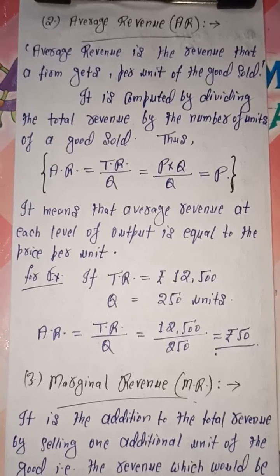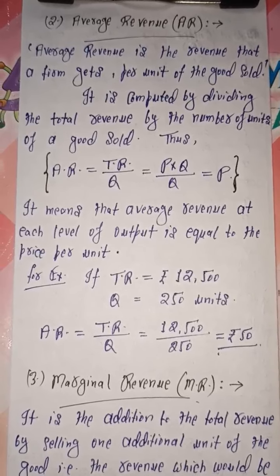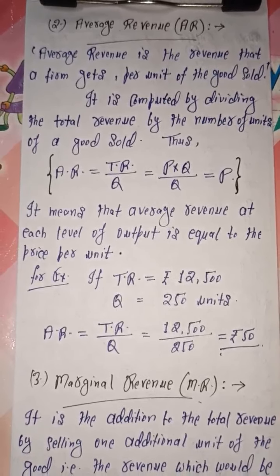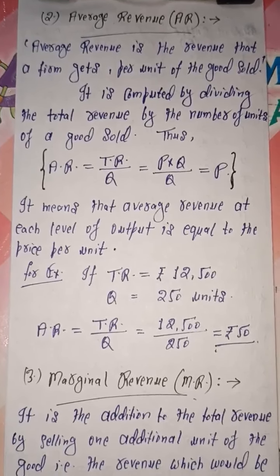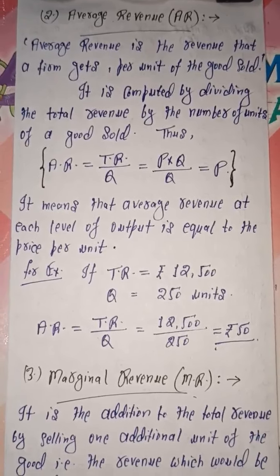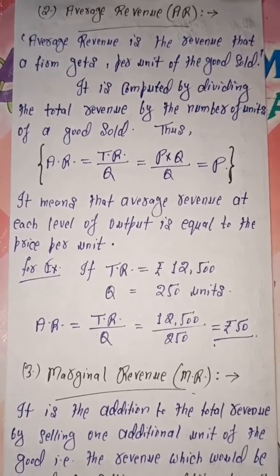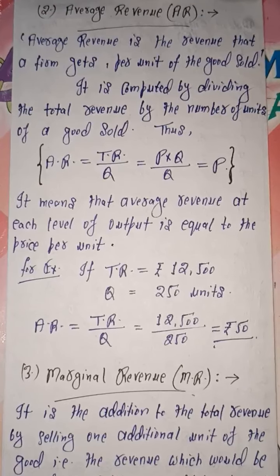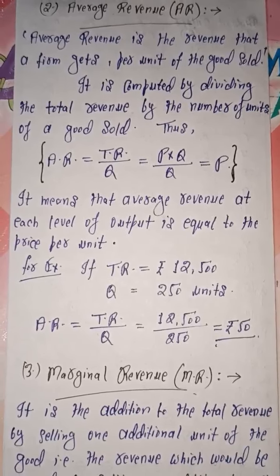Since the formula for TR is P into Q, we get AR = P×Q / Q. Q cancels with Q, and you get the value equal to P. It means the firm's average revenue is equal to its price per unit. This is why revenue per unit of goods sold is known as average revenue.